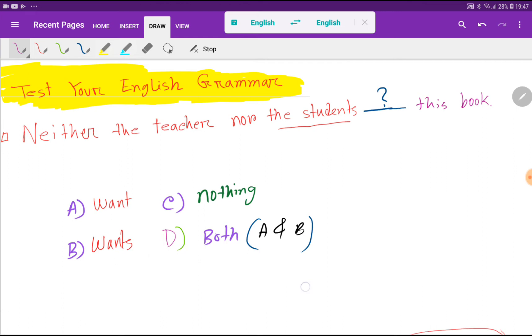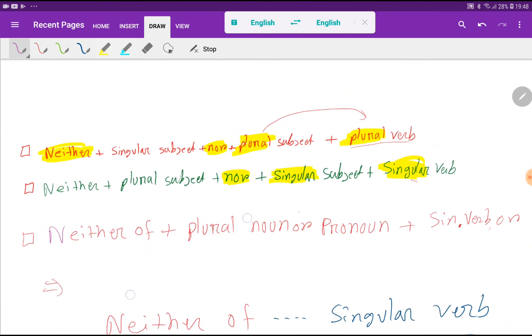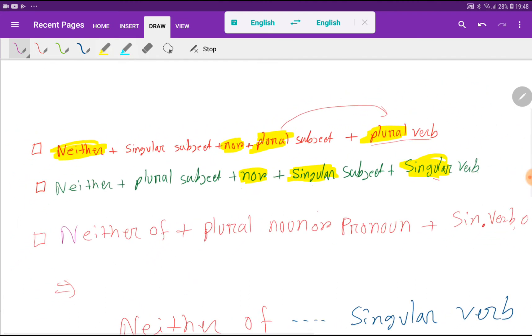Let me give you some basic points. Look here: Neither + singular subject + nor + plural subject. After plural subject we use plural verb, so the form of the verb will be determined by the subject after nor.